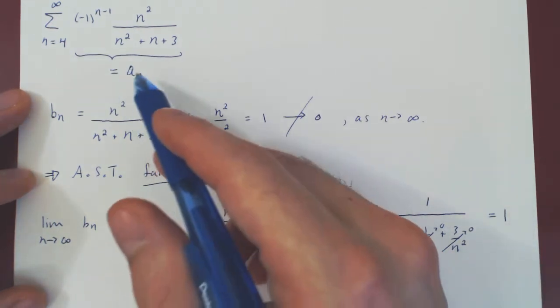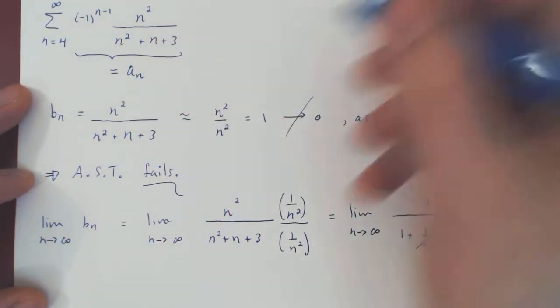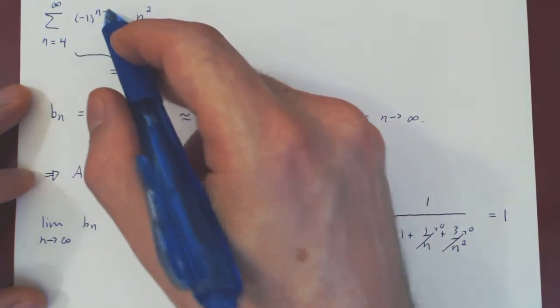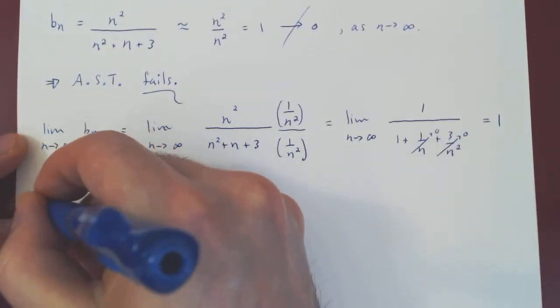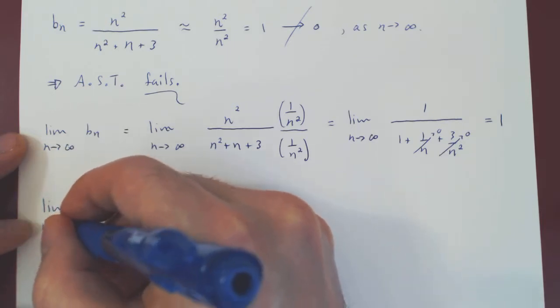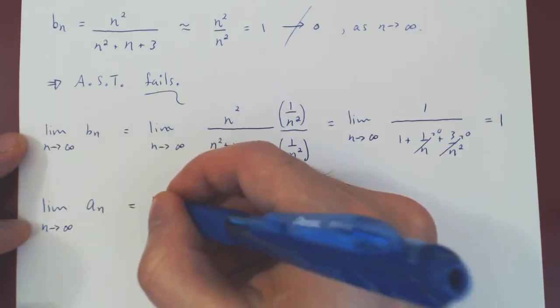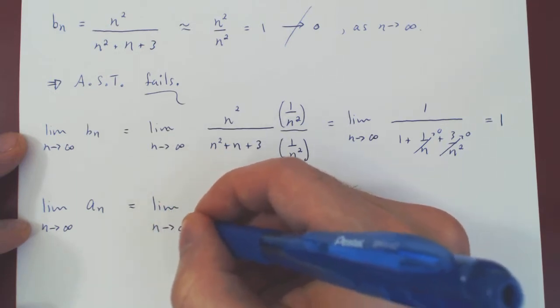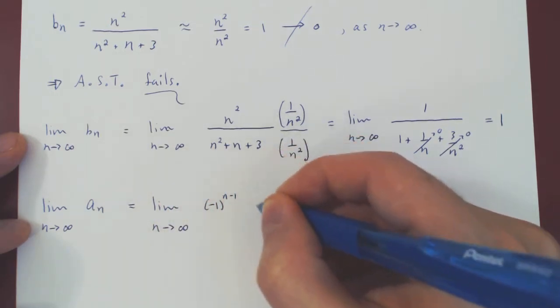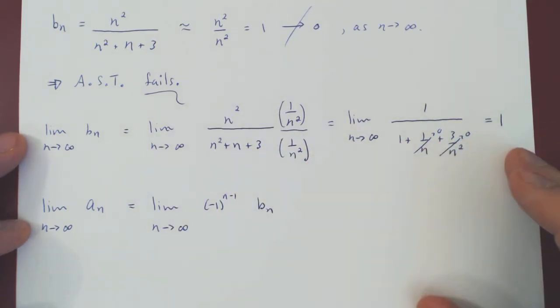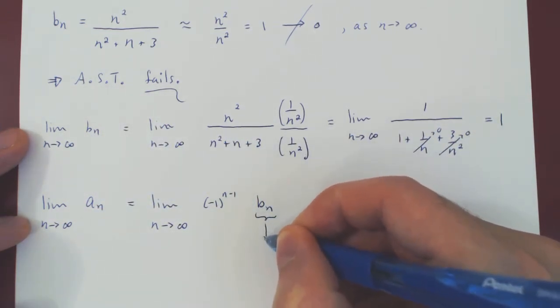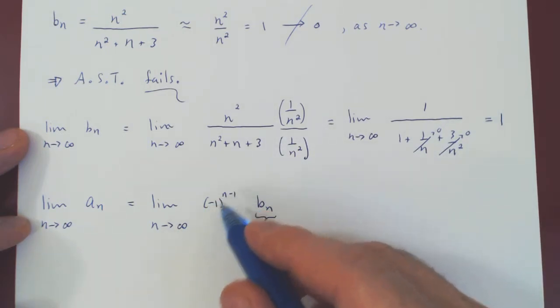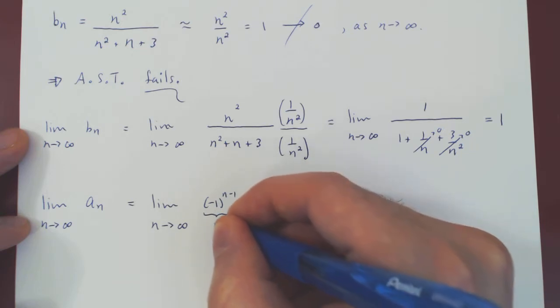And now we can look at an, which, of course, if you look at this, an is simply negative 1 to the n minus 1 times bn. But as we have just shown, as n tends to infinity, bn approaches 1. So, this part of our sequence is getting closer and closer to 1, and negative 1 to the n minus 1 is always either positive or negative 1.